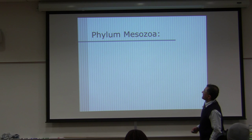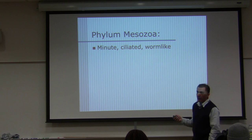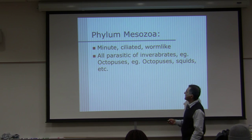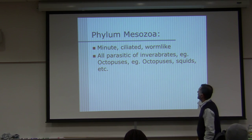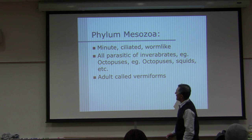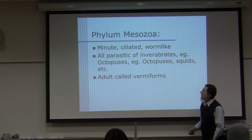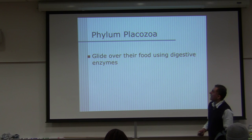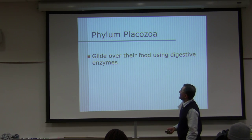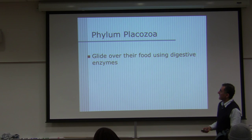Phylum mesozoa: they are minute, very small, ciliated, worm-like — called vermiforms. All are parasitic of invertebrates like octopus and squid. Vermiform means worm-like. Phylum placozoa: they glide over food using digestive enzymes. I don't have much to say about that phylum either.